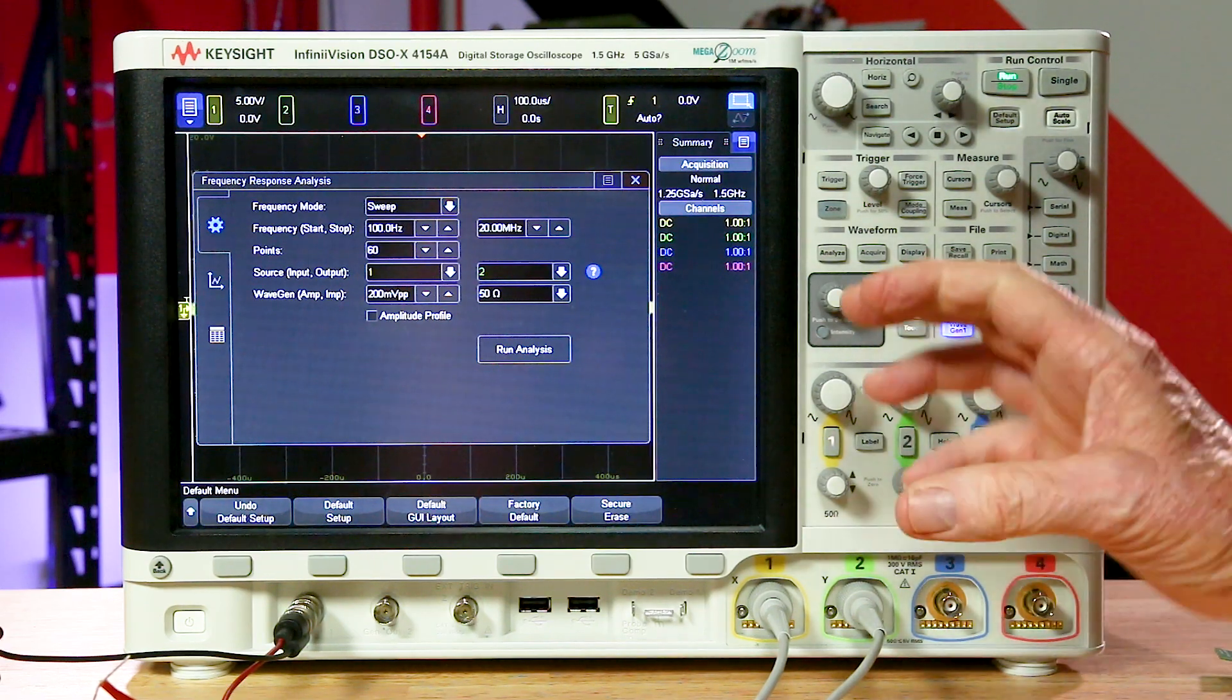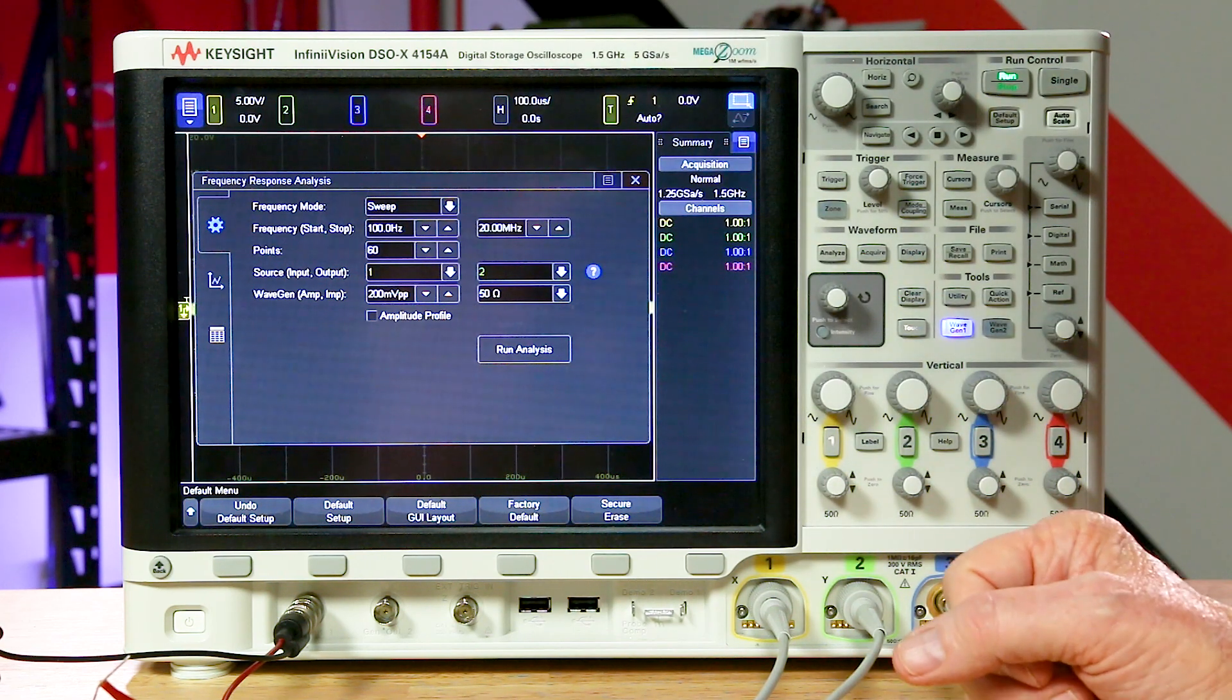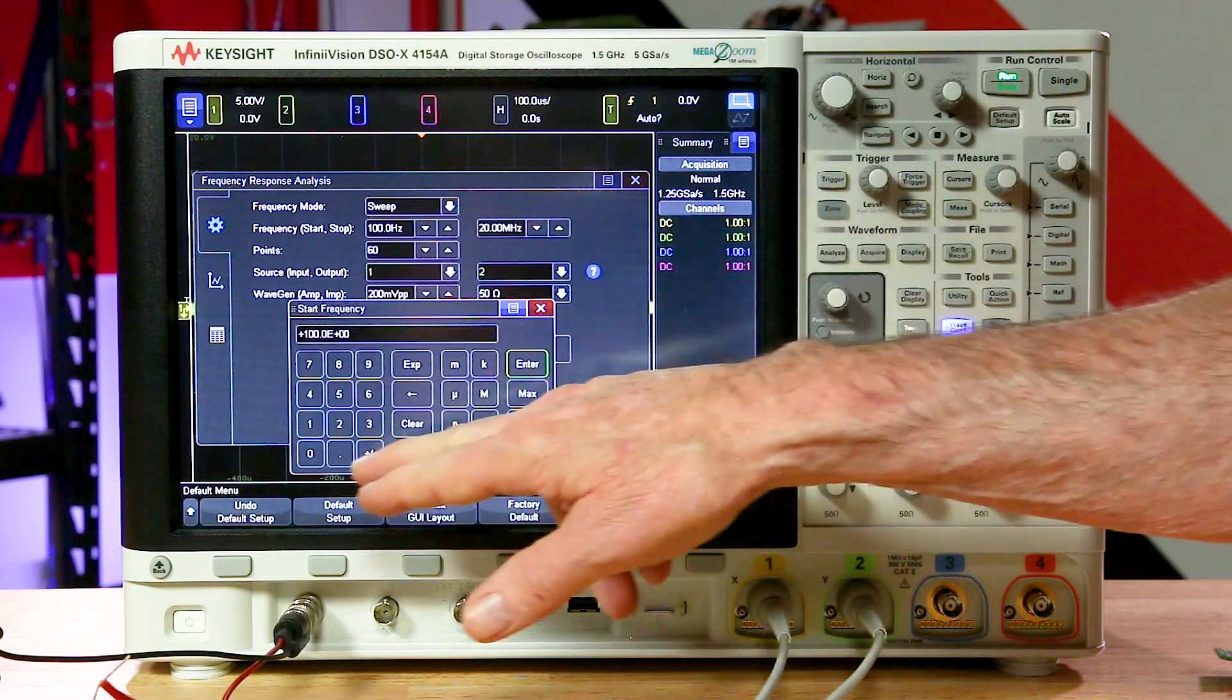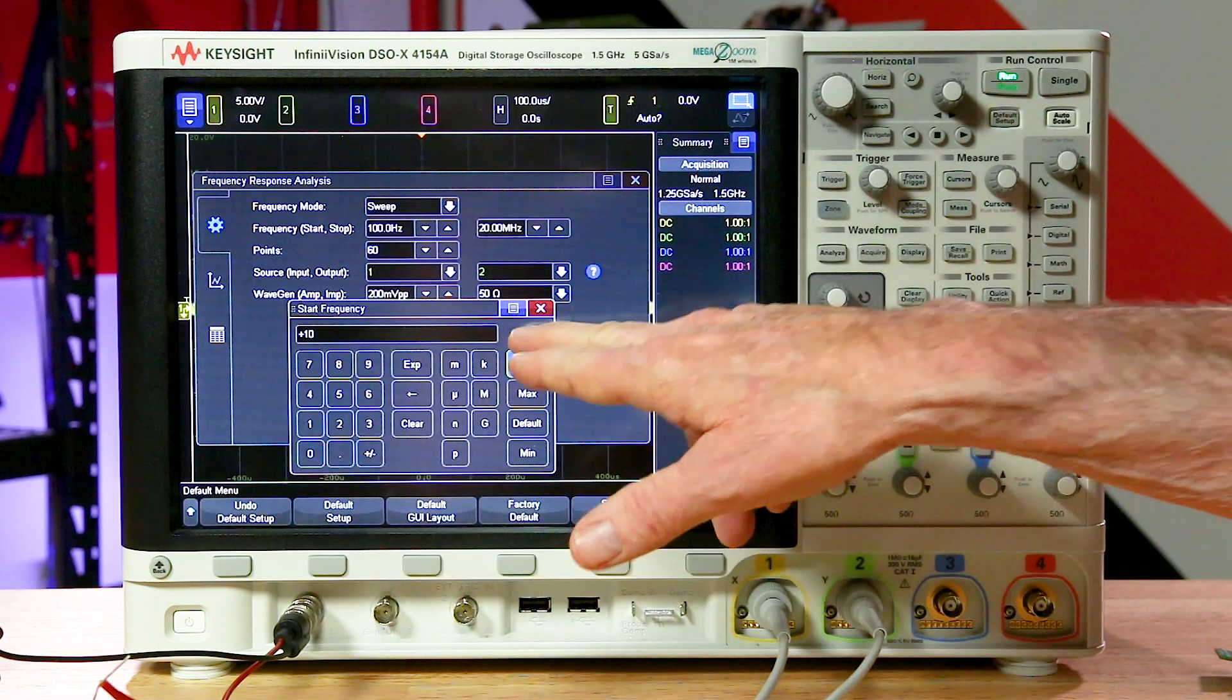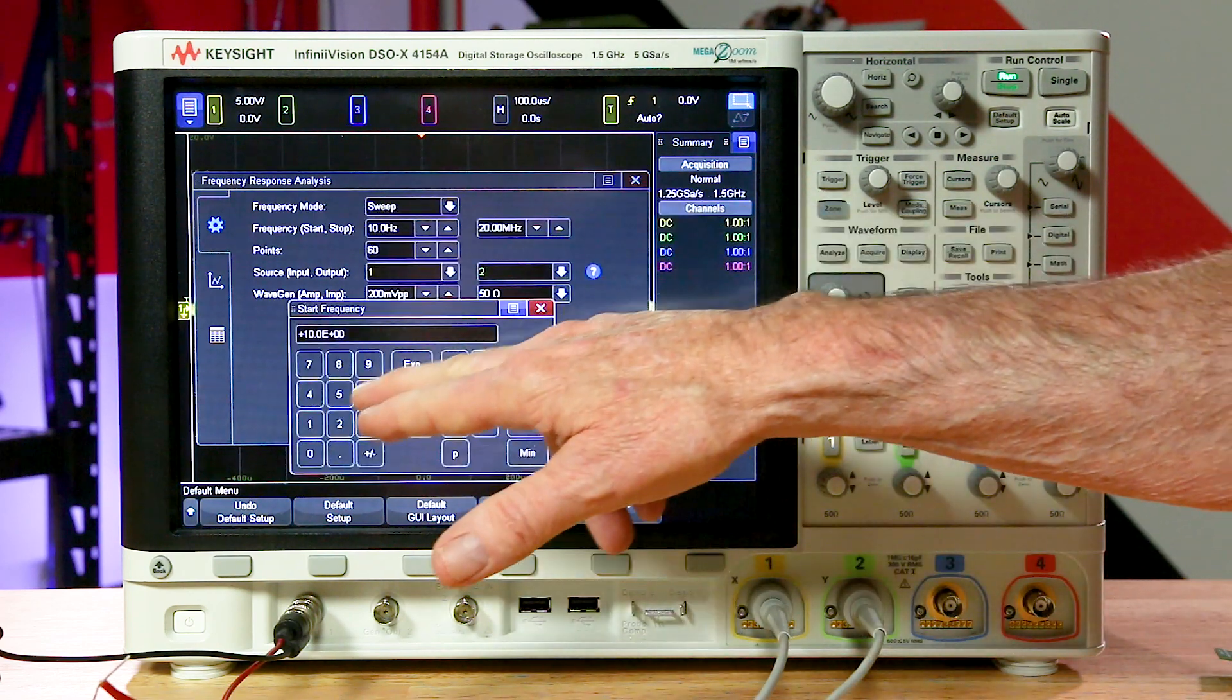Let's begin with the setup menu for the parameters you set up to run a test. One thing you told us was you needed a lower start frequency, so now we've lowered it down to 10 hertz. For the test I'm going to run in a few minutes, let's start it at 20 hertz.